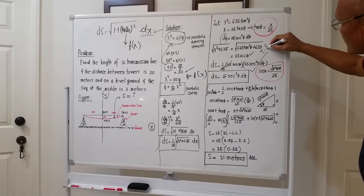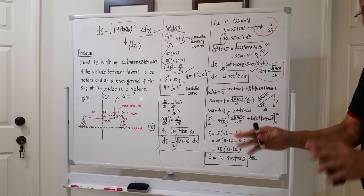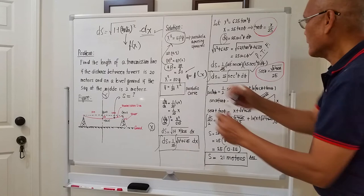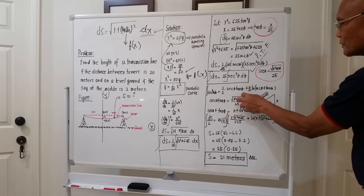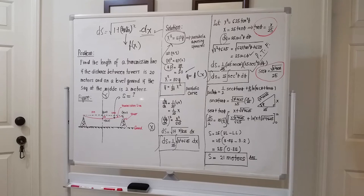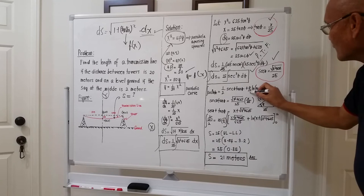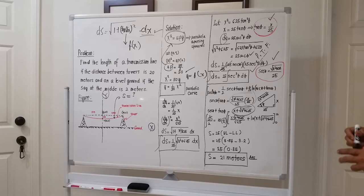This integral of sec³(θ) is solved using powers of trigonometric functions — a technique we covered previously. The result is: ∫sec³(θ) dθ = (1/2)·sec(θ)·tan(θ) + (1/2)·ln|sec(θ) + tan(θ)|. We need the values of sec(θ) and tan(θ), and their sum. These are derived from the substitution tan(θ) = x/25.